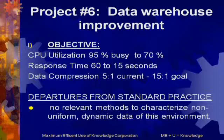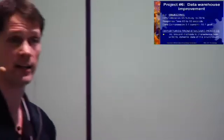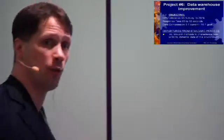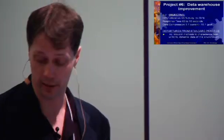Response time — I've plugged in a number of 60 seconds, and maybe they want to get down to 15 seconds. Data compression: maybe current performance is 5 to 1, and the goal is 15 to 1. The CRA's example doesn't provide these metrics — they only talk about variables. I'm saying for a claim to be eligible, you would want to provide the metrics. Otherwise you would tend to get a site visit, in my opinion.